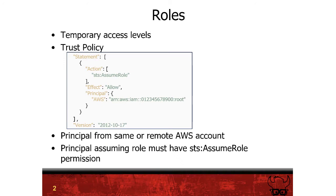In general, in order for a user to be able to assume a role, two things must be true. First, the user must meet all of the conditions in the role's trust policy. The default condition is that anyone from a specific AWS account can assume the role.